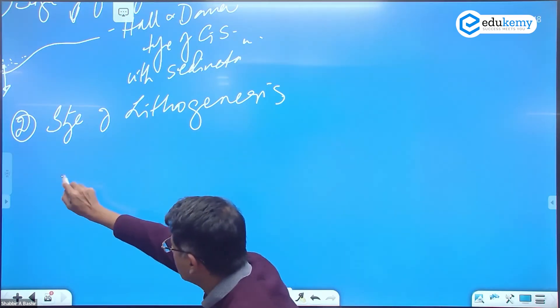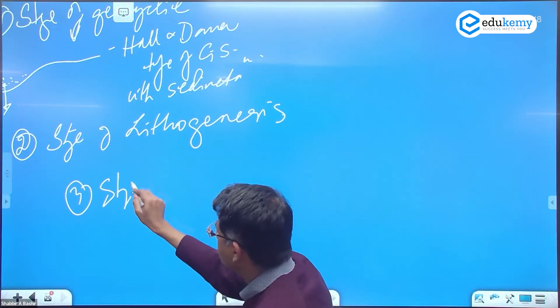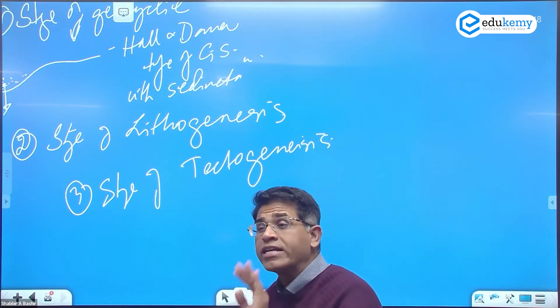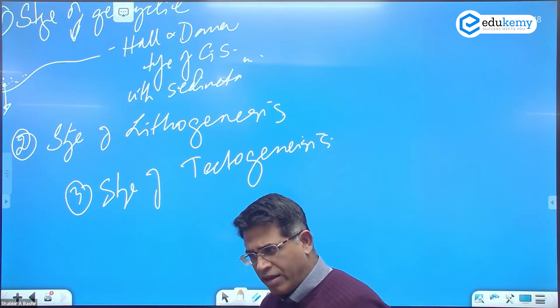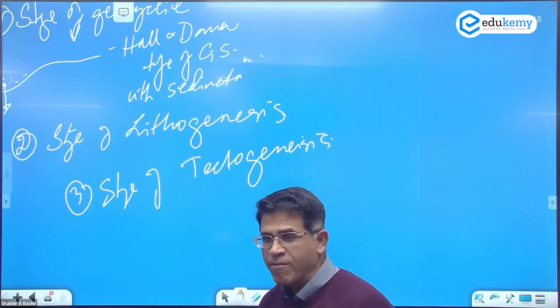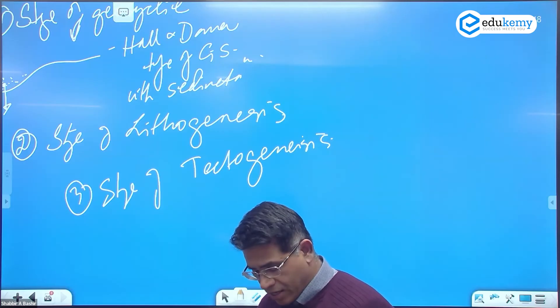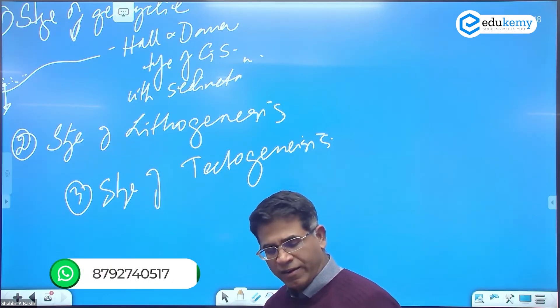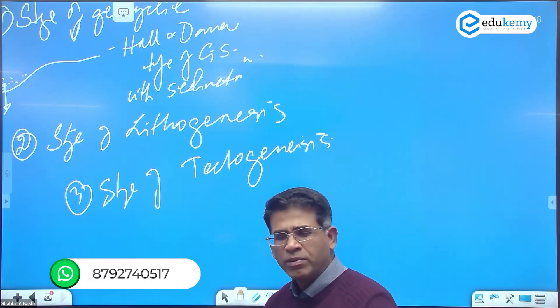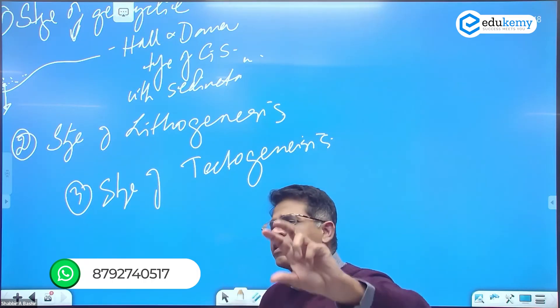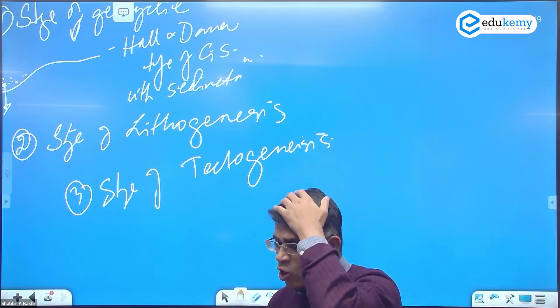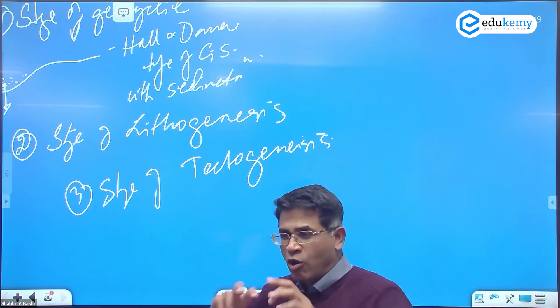The third is the stage of tectogenesis. This is a quieter stage where rock structures develop within the geosyncline. The orientation of the bedding planes, the rock layers.